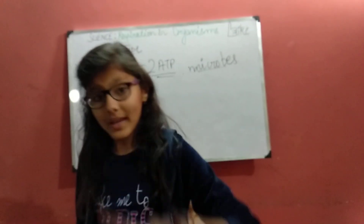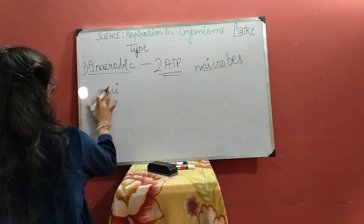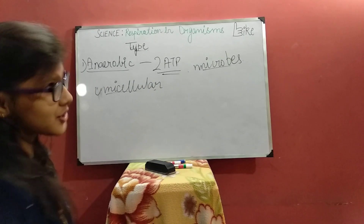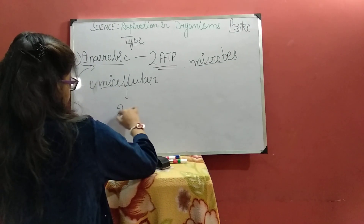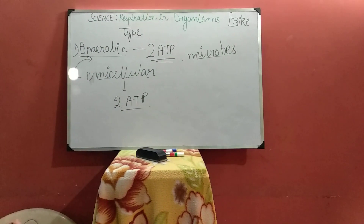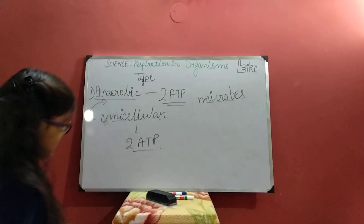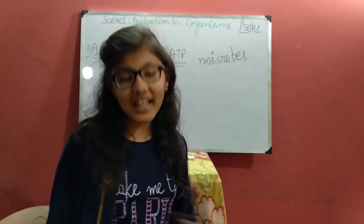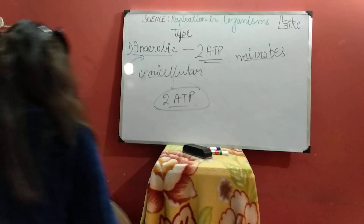This process is very common in microbes. Microbes are unicellular organisms, so they do not require as much energy as we do. By this method, they get two ATP molecules which are enough for their survival. So unicellular organisms, that is microbes, use this process. The equation changes in this process, but the energy release of only two ATPs is enough for them.